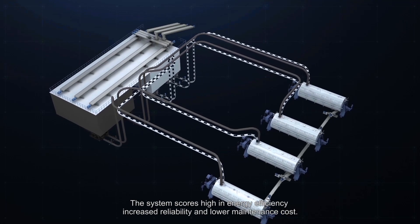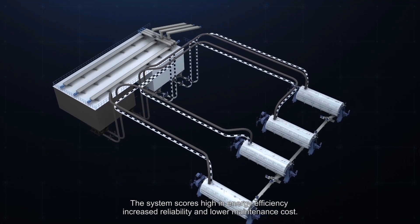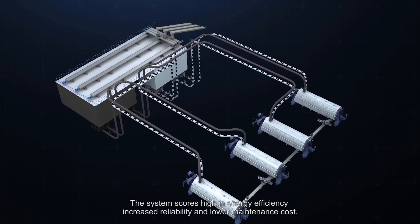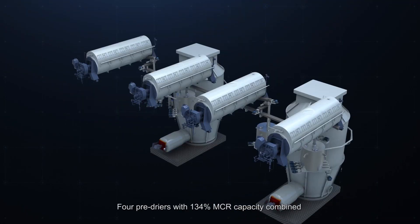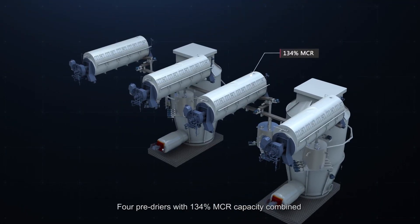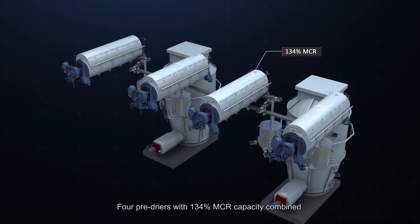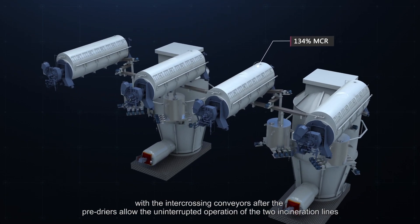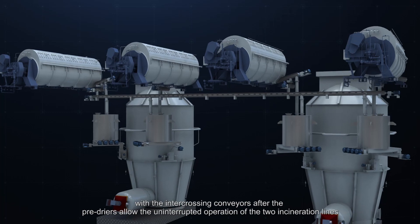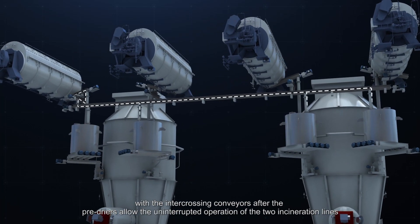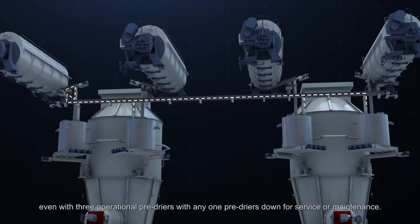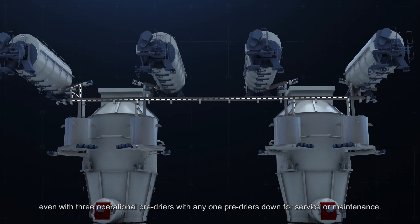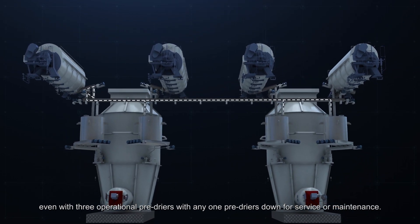The system scores high in energy efficiency, increased reliability and lower maintenance cost. Four pre-dryers with 134% MCL capacity combined with the inter-crossing conveyors after the pre-dryers, allow the uninterrupted operation of the two incineration lines, even with three operational pre-dryers with any one pre-dryers down for service or maintenance.